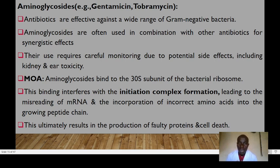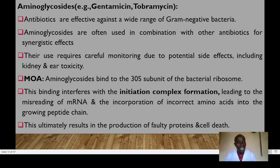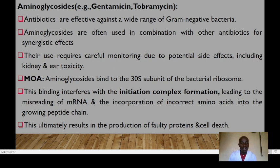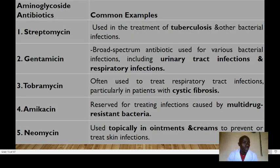Aminoglycosides are the third group — antibiotics effective against a wide range of gram-negative bacteria. They are often used in combination with other drugs for synergistic effects, and their use requires close monitoring due to potential side effects including kidney and ear toxicity. They work by binding to the 30S subunit of the bacterial ribosome, interfering with the initiation complex formation. This leads to misreading of messenger RNA and incorporation of incorrect amino acids into the growing peptide, resulting in faulty proteins and bacterial death.